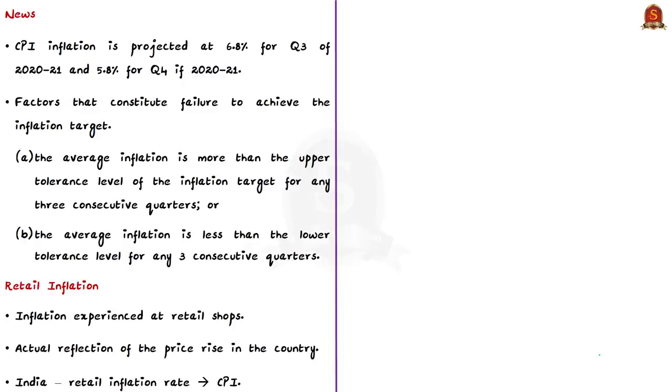Keeping these facts in mind, let us see about the CPI inflation projection. CPI inflation is projected at 6.8% for quarter 3 of 2020-21, which is above the upper tolerance limit of inflation targeting. For quarter 4, it is projected at 5.8%, which is close to the upper tolerance limit. The fact of CPI inflation above or below the inflation targeting is important because they are the components of factors that constitute the failure to achieve the inflation target. These factors are: when the average inflation is more than the upper tolerance limit for any 3 consecutive quarters, and when the average inflation is less than the lower tolerance level for any 3 consecutive quarters.